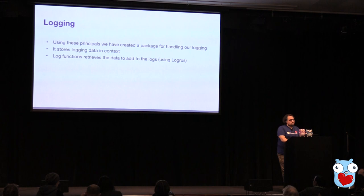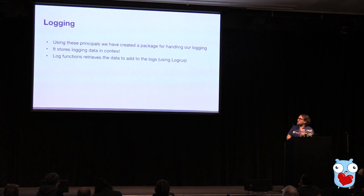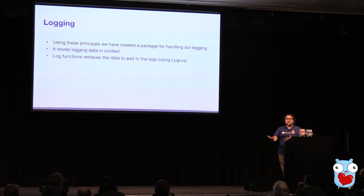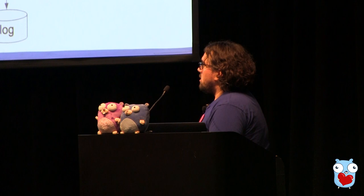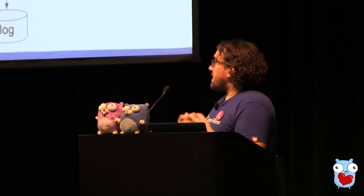So now let's talk about how this applies to logging and how we use context to enable our logging. We've made a package to make context-aware logging. It stores logging data in a context, and then there are logging functions that accept a context. Any time those are called, it will append any of that logging data that is present in the context. We use Logrus for our logging, so this is all really just a thin wrapper on top of Logrus. At the end of the day, I would say that logging cares about context — it is contextual — and we're usually using it as a debugging tool.